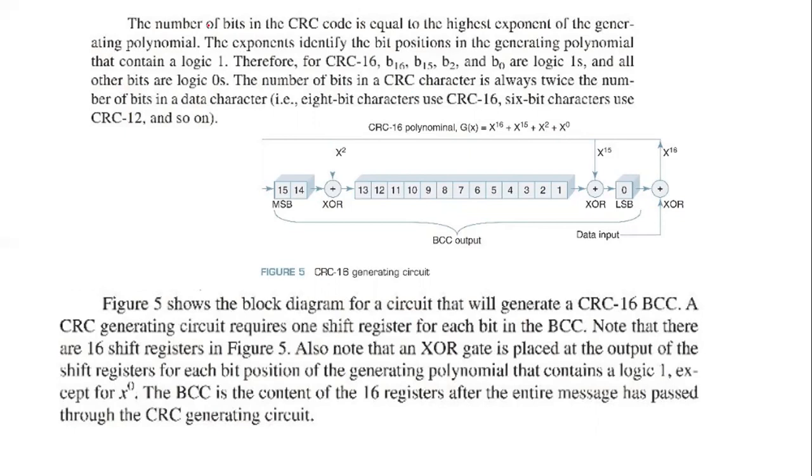The number of bits in the CRC code is equal to the highest exponent of the generating polynomial. The exponents identify the bit position in the generating polynomial that contains logic 1. Therefore, for CRC-16, B16, B15, B2, and B0 are logic 1, and all other bits are logic 0.